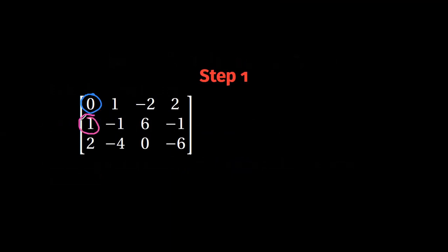As for the first step, we immediately see that we have a zero, but we would like to have one here in the first corner. However, just below we have the number one. So the best thing to do in this case is to interchange row one with row two.